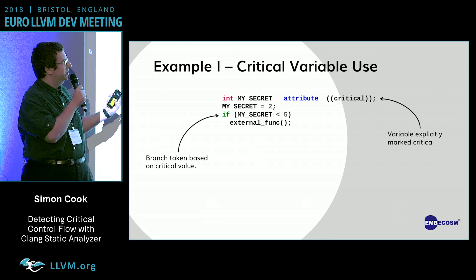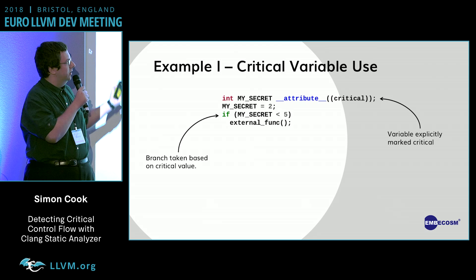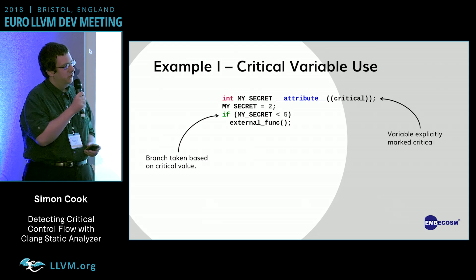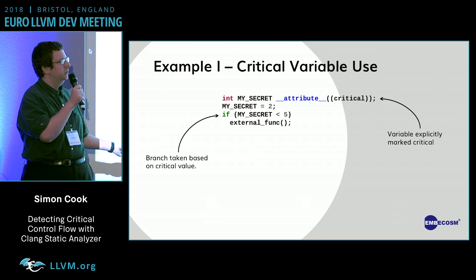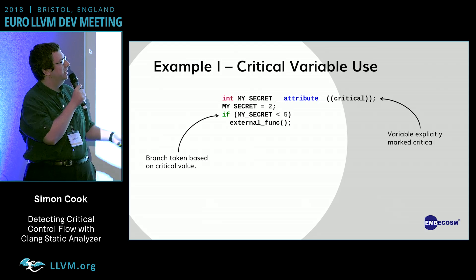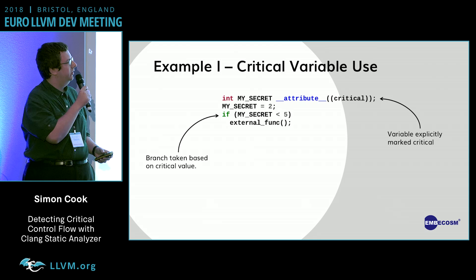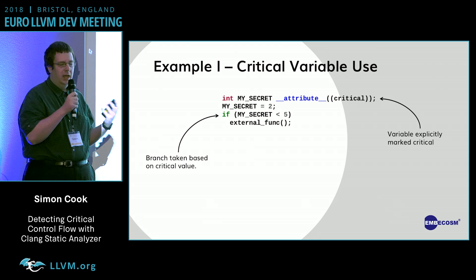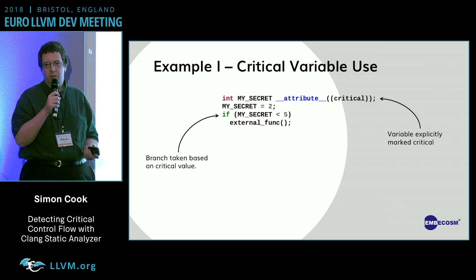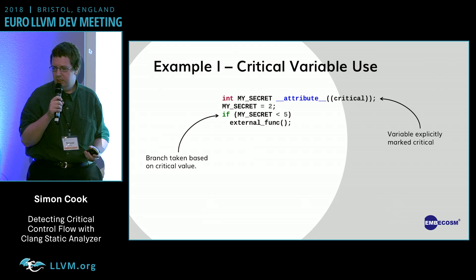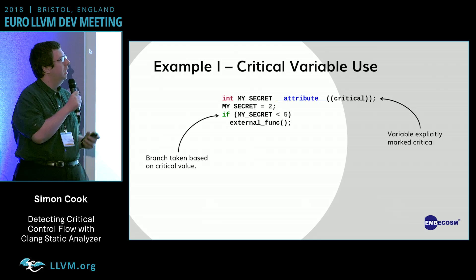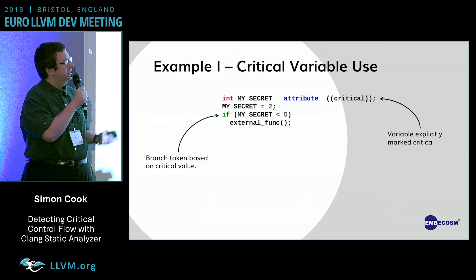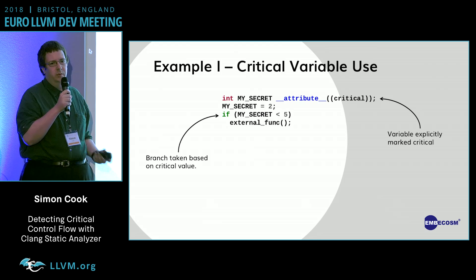So, if you can see the execution flow of my program, you might be able to infer some information about my variable, and we really want this to not happen. That's a simple example.